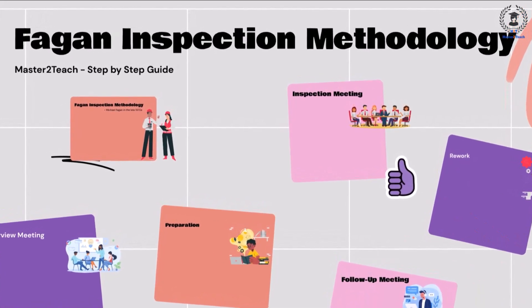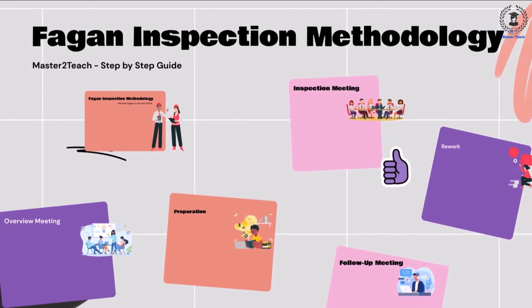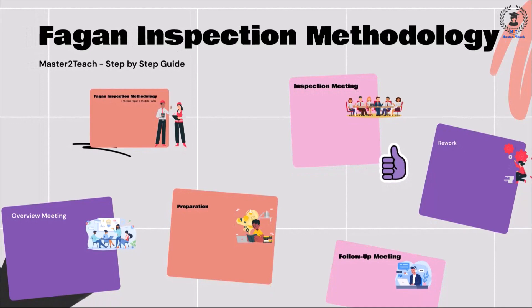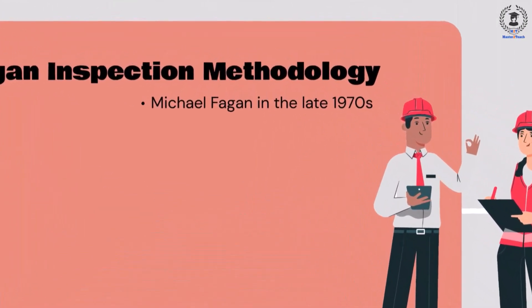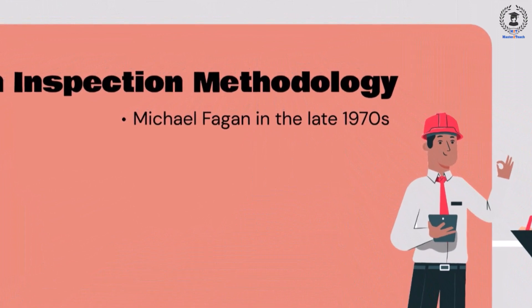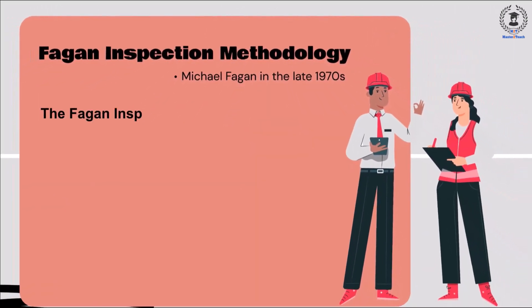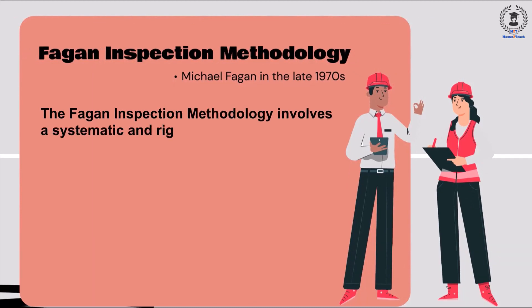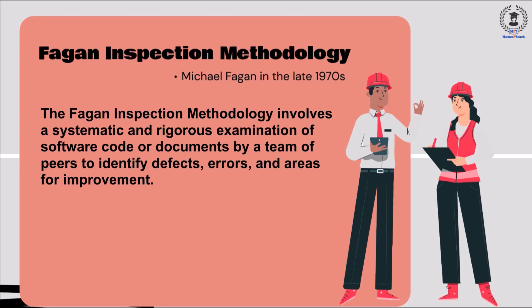The Fagan inspection methodology is a structured approach used in software engineering for peer review of software artifacts, primarily focusing on code inspection. It was developed by Michael Fagan in the late 1970s and has been widely adopted in various software development methodologies. The methodology involves a systematic and rigorous examination of software code or documents by a team of peers to identify defects, errors, and areas for improvement.